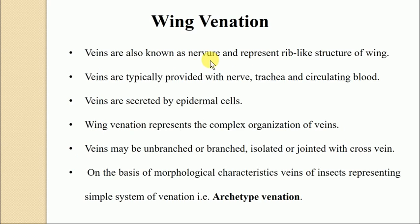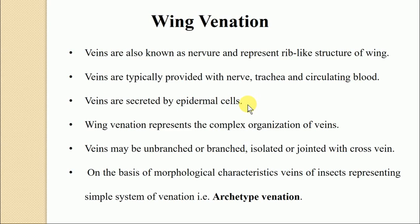The veins are also known as nervules, and represent the rib-like structures which give support to the wing. These are hollow, tubular, and sclerotized structures, each typically provided with a vein, nerves, trachea, and circulating blood. According to Holtsworth in 1940, trachea and nerves grow into the channel only after their pattern has been established.